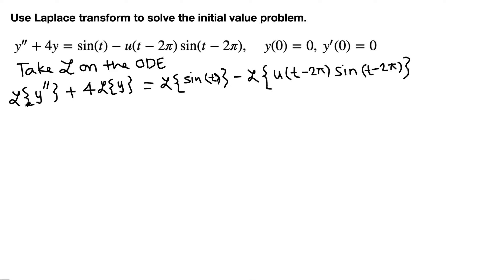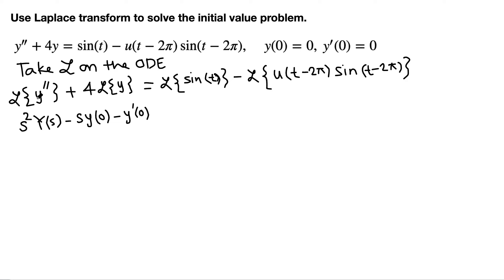From the formula list, Laplace of y'' is s² · Y(s) minus s·y(0) minus y'(0). So Laplace of y'' plus 4 Laplace of y, where we denote Laplace of y by uppercase Y, gives us the left-hand side. On the right side we have Laplace of sin(t).